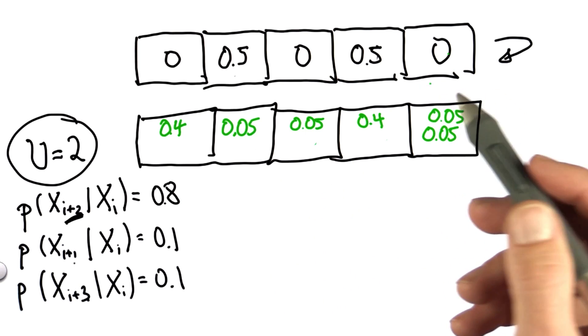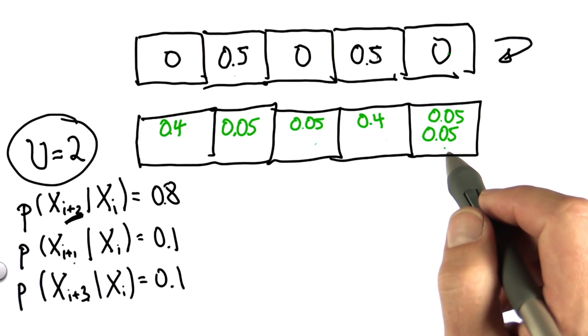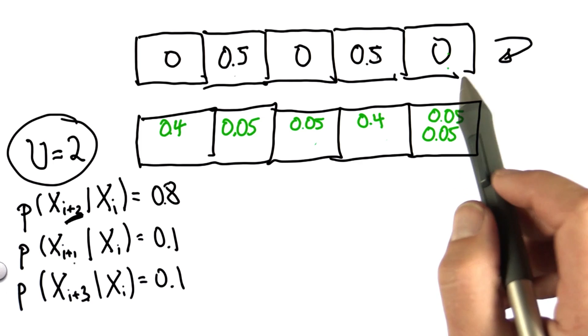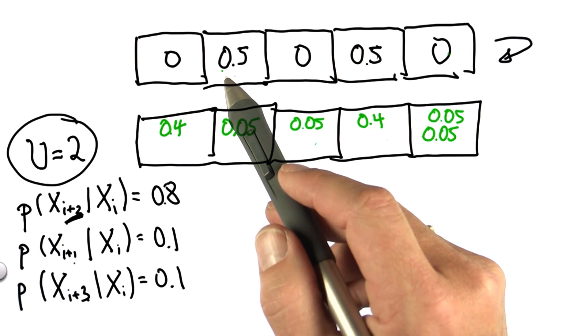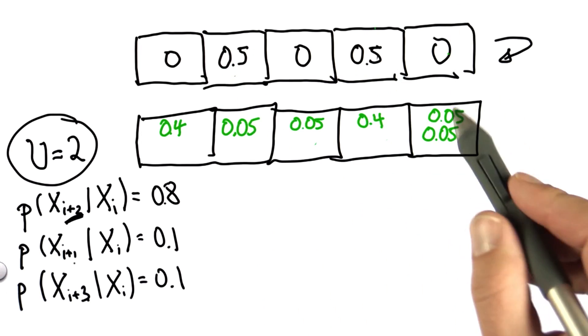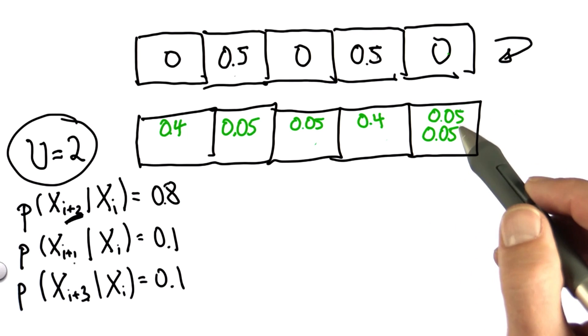And interestingly enough, for the cell on the right side, there's two possible ways you could have gotten there. Either by overshooting, starting in the second cell, or undershooting, starting in the right cell. So the total probability over here is the sum of these two things, 0.1.